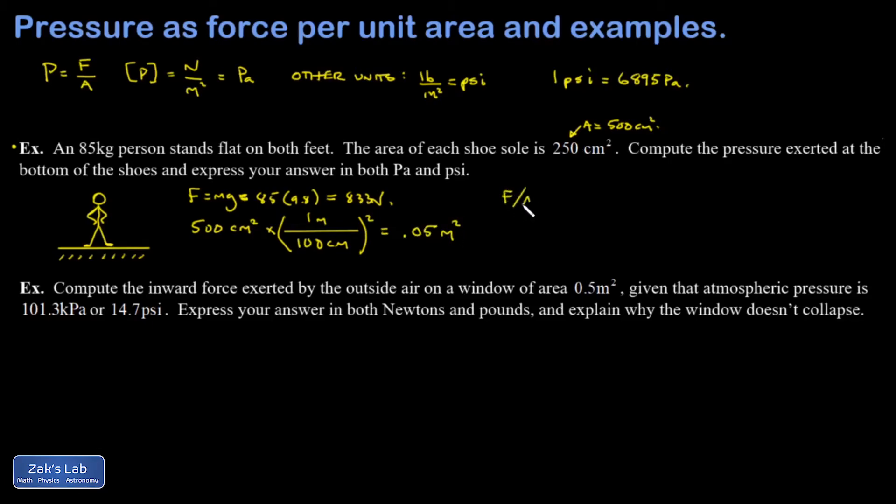Finally, I take the force and I divide by the area. And I get 833 newtons divided by 0.05 square meters. This comes out to 16,700 pascals. And that's just further confirmation that pascals are very small units of pressure. If I want to convert to psi, I would go 16,700 pascals times 1 psi for every 6,895 pascals. And that comes out to 2.42 pounds per square inch or psi.